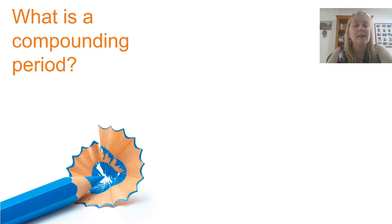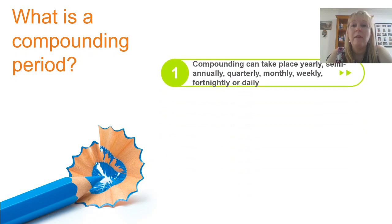So you may be asking what is a compounding period? Well typically with most compound interest problems that you'll encounter particularly in grade 10, a compounding period is usually once a year. However compounding can take place semi-annually which means twice a year, quarterly which is four times a year, monthly, weekly, fortnightly, daily etc.